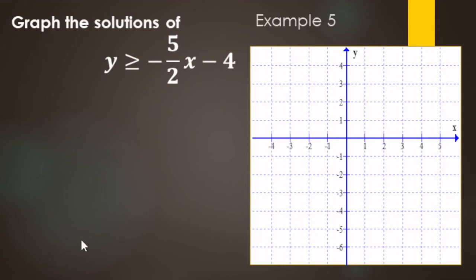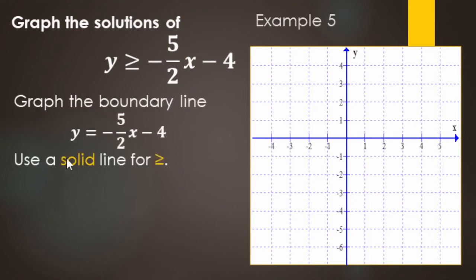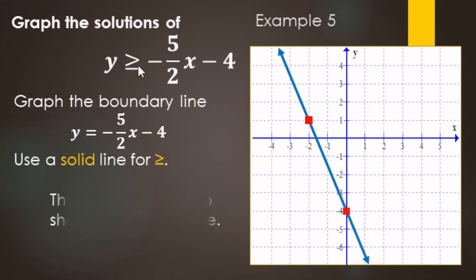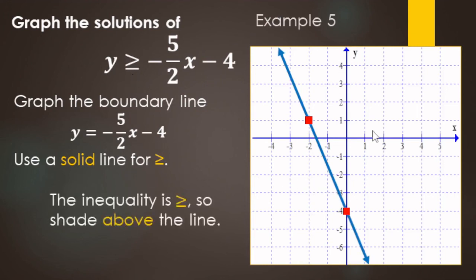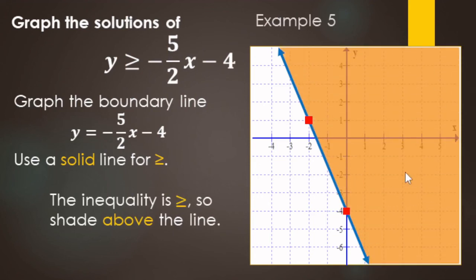Last example: we're going to graph y is greater than or equal to negative five-halves x minus 4. We start by graphing the boundary line — it's solid because it's or equal to. The y-intercept is negative 4. The slope is negative five-halves, so we go down 5 over 2. Since we run out of room going down, we go the opposite direction: up 5 and left 2 to plot another point. Since it's greater than or equal to, we use a solid line and shade above the line. Points on the line and in the shaded region are solutions.